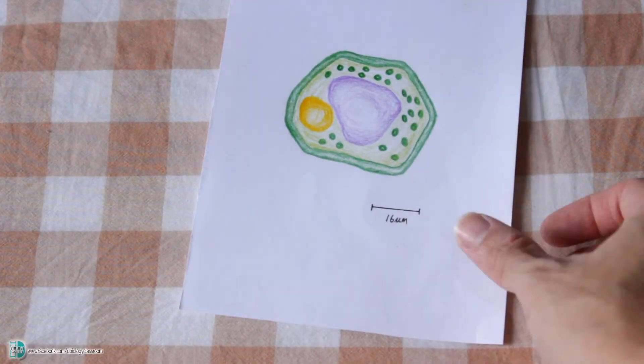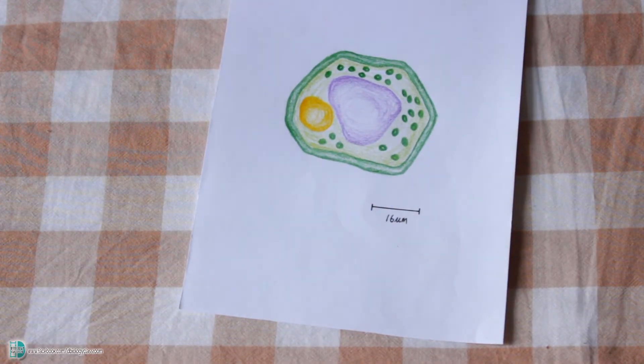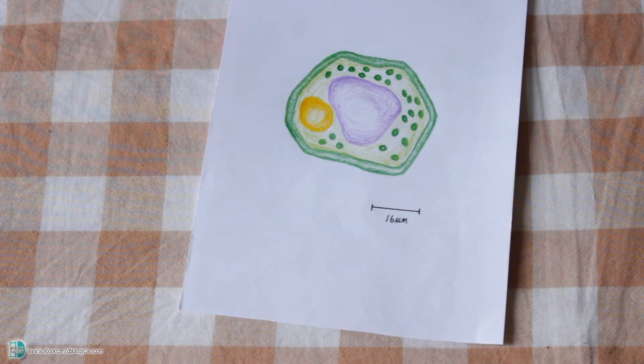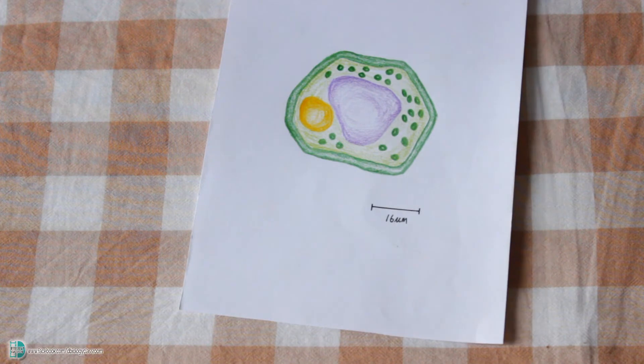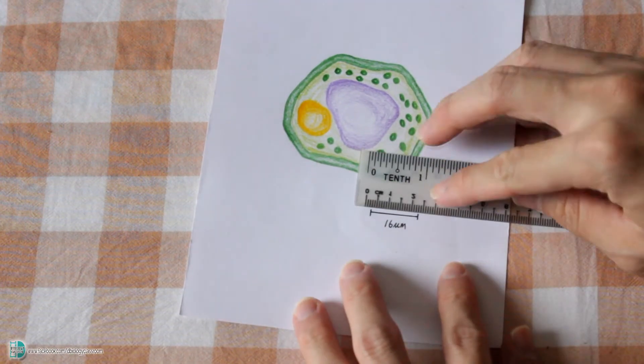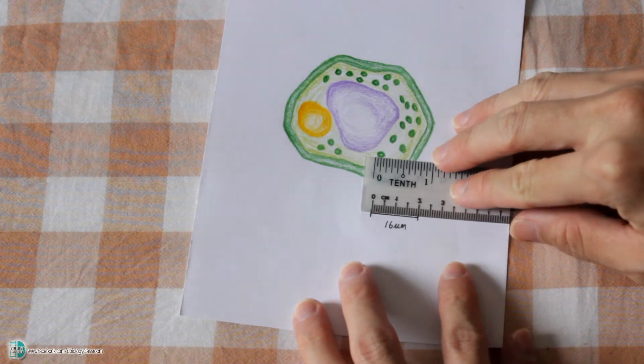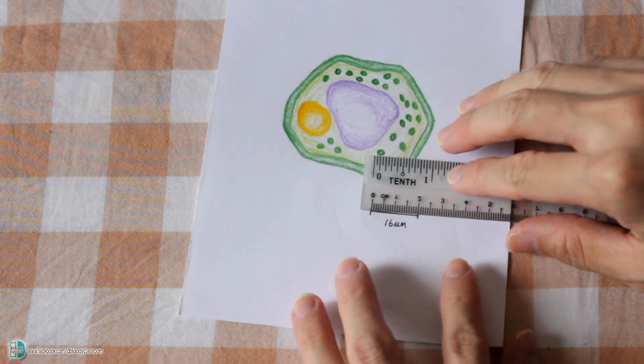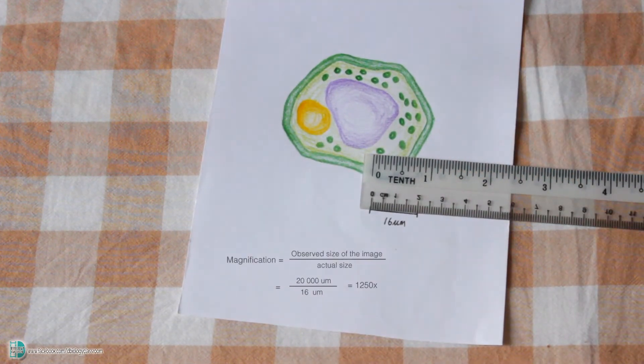Sometimes, you might be given a diagram or a photomicrograph with a scale bar. In this example, you have a diagram of a plant cell. You are required to calculate how much the cell has been magnified in the image. In this case, you just have to measure the image size of the scale bar. Then, divide it with the actual length it represents. You will be able to find out the magnification of the picture without having to measure the cell.